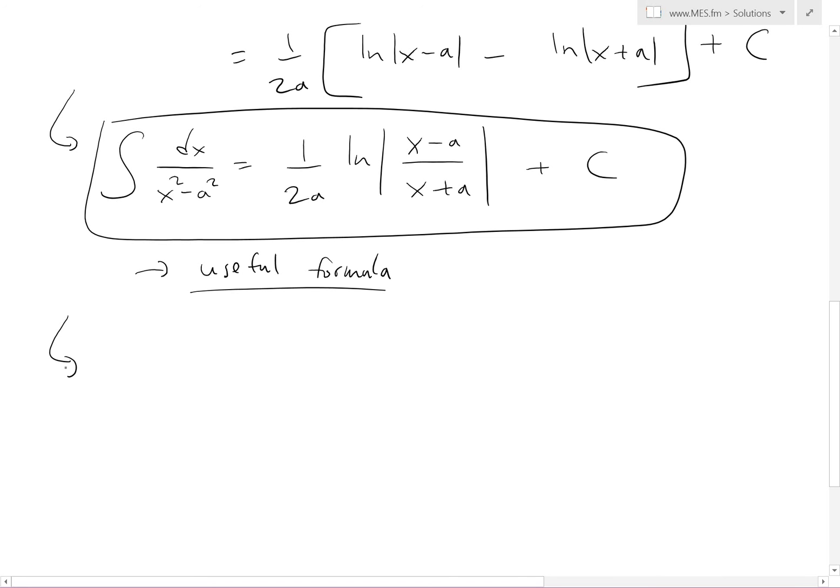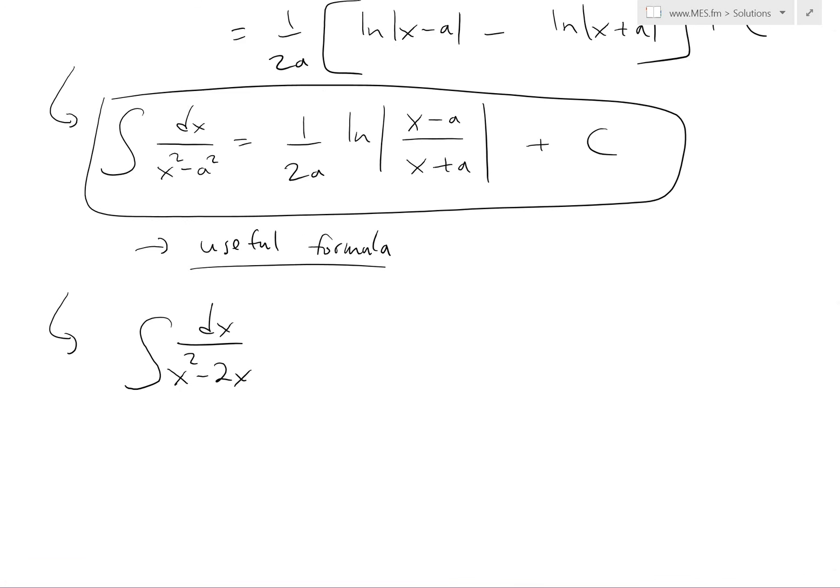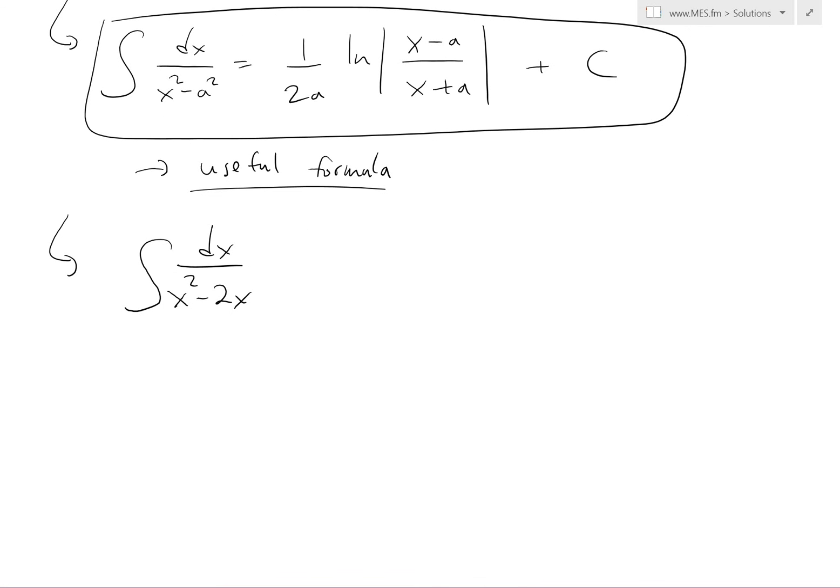So for example, if we had the integral of dx over x squared minus 2x, instead of using partial fraction decomposition, we could use this formula. First, let's break this down. We know that x minus 1 squared equals x squared minus 2x plus 1.